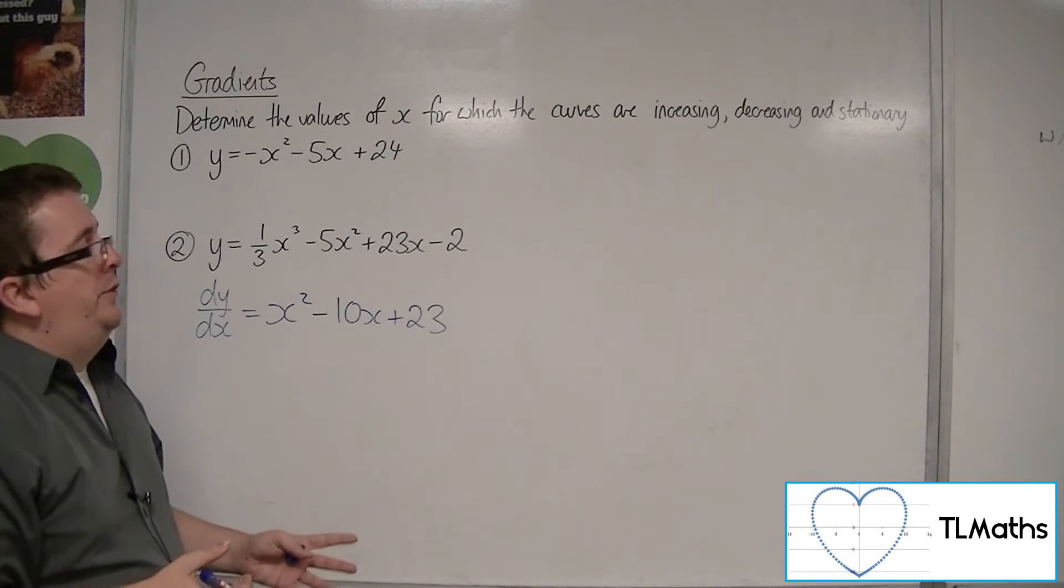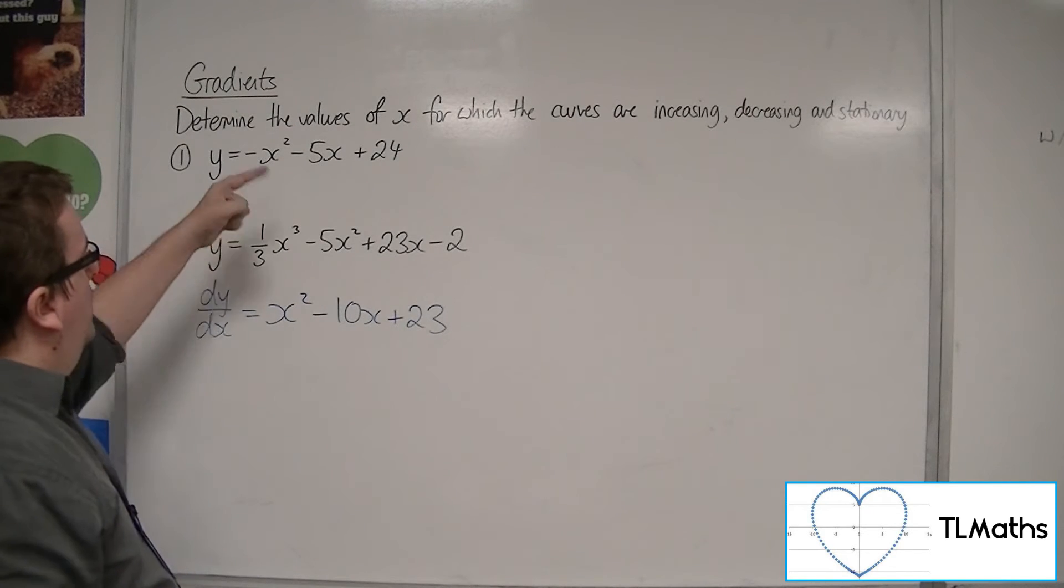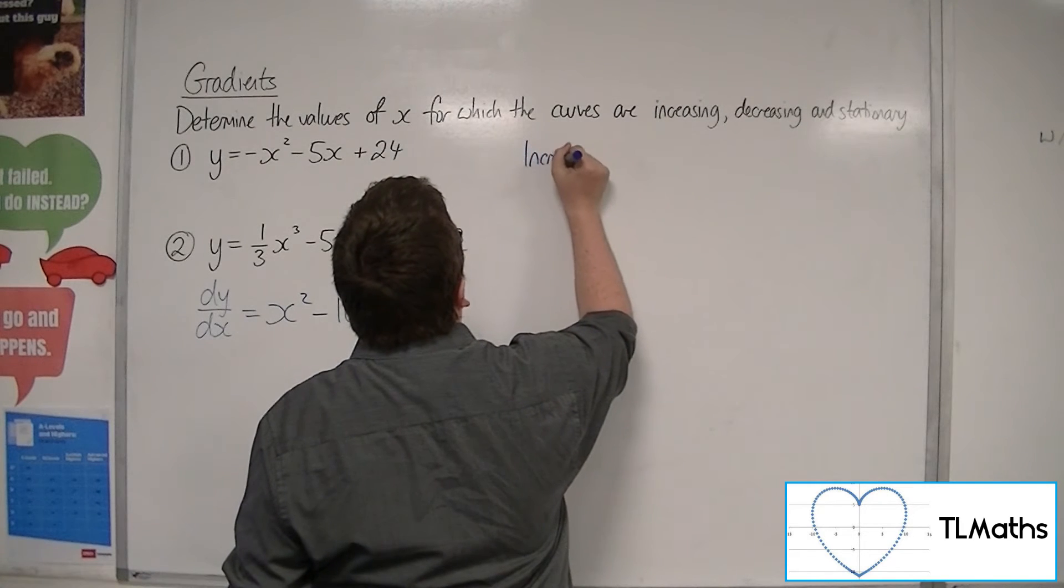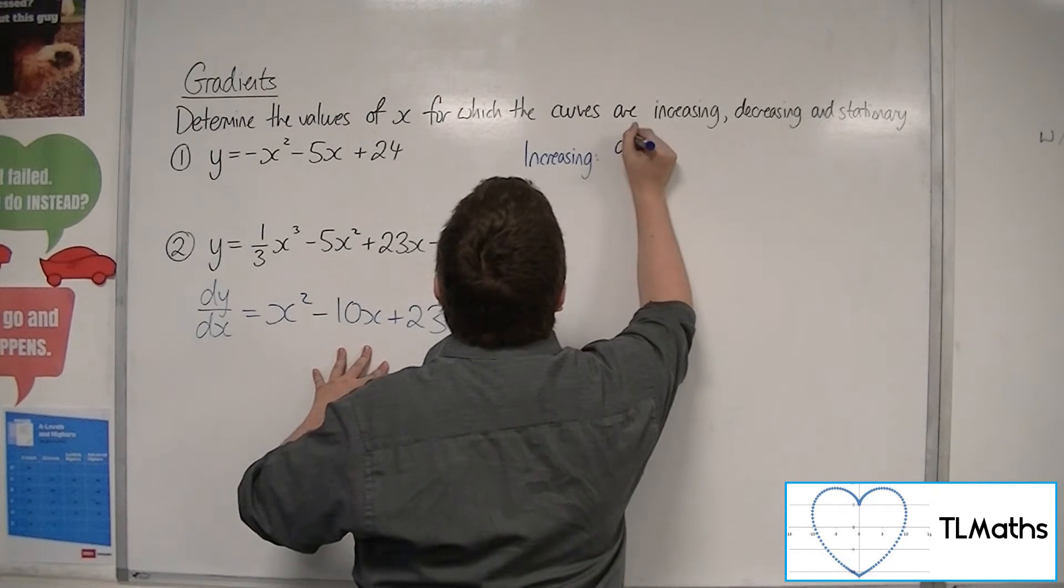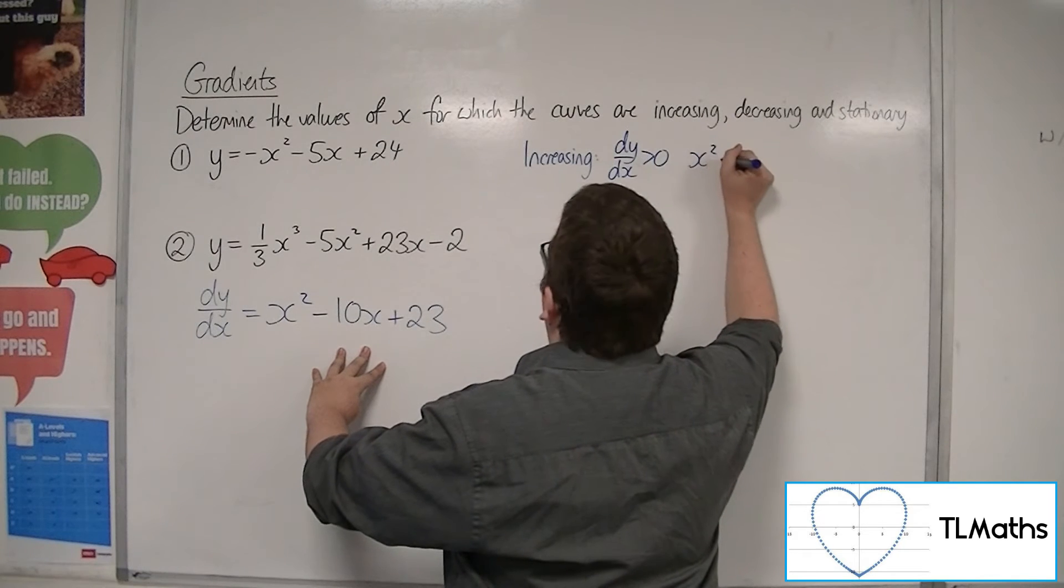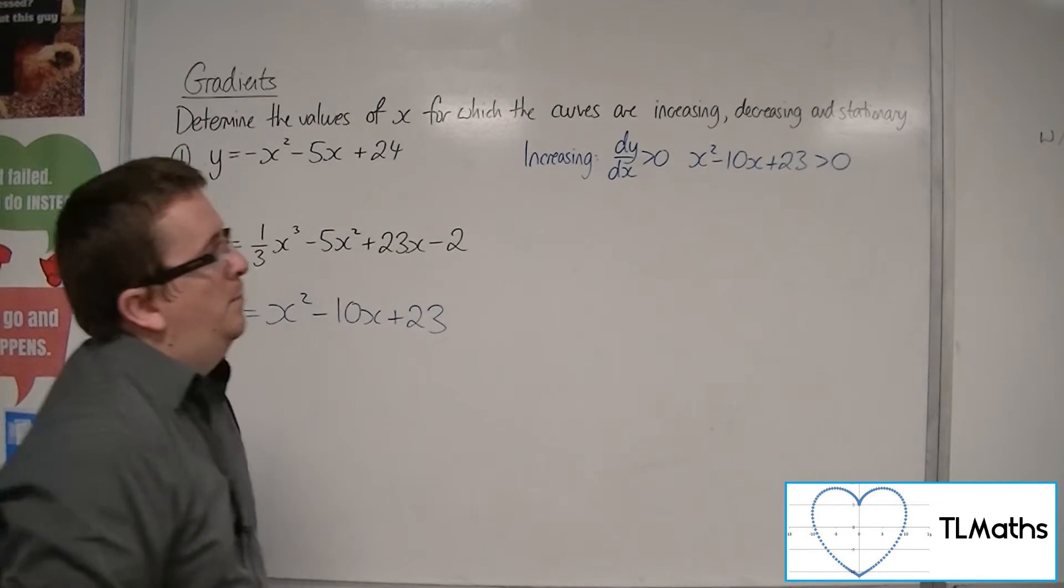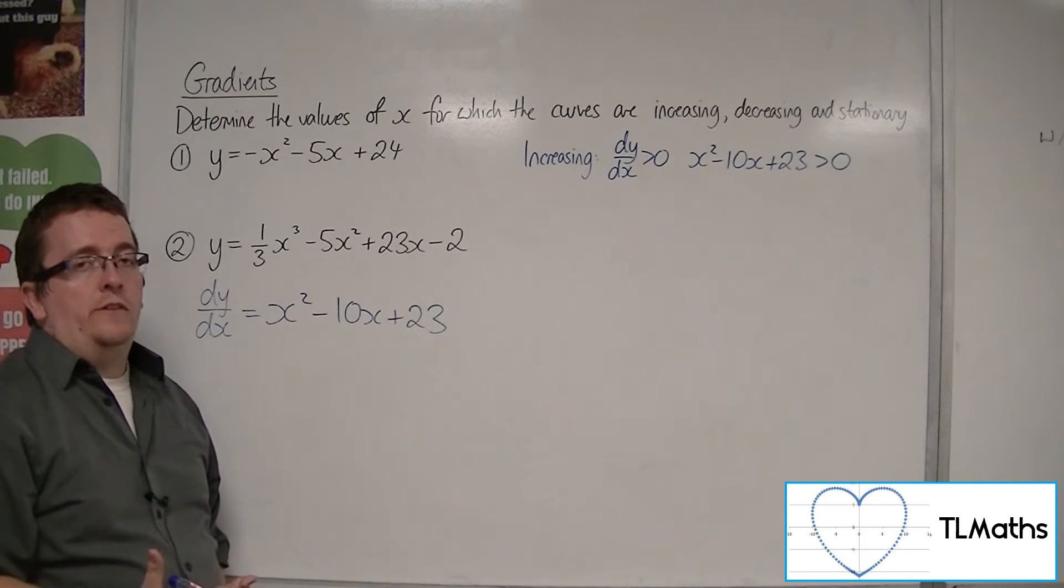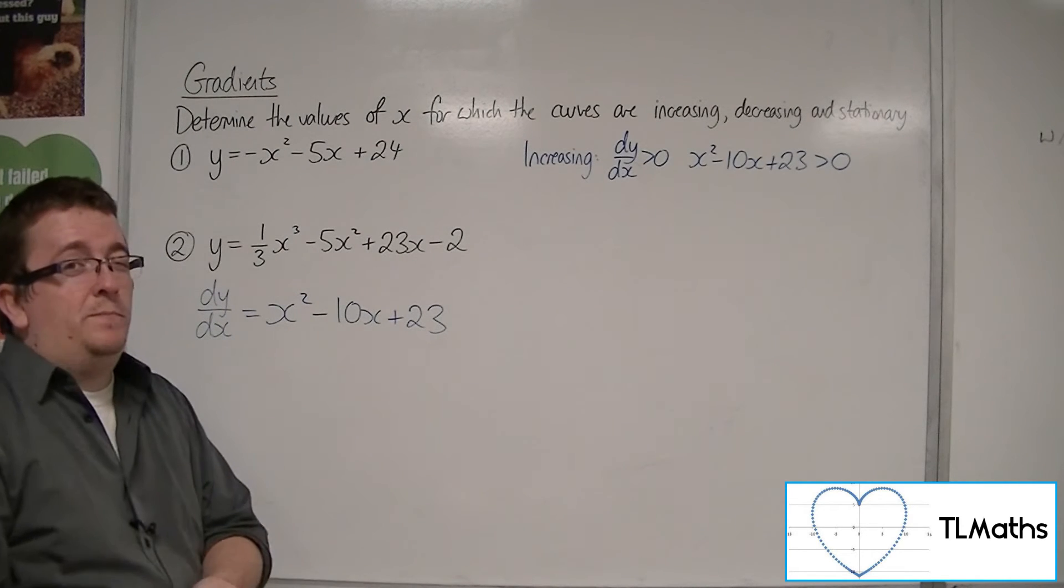Now, if I use the same technique as I did before with number 1, then what I'm looking for is, if it's increasing, I want to solve the inequality, dy by dx is greater than 0. So, x squared minus 10x plus 23 is greater than 0. But, I'm going to need to figure out where that curve crosses the x-axis. So, really, I want to solve the stationary points bit first.